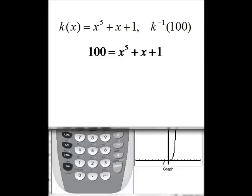Which again, we can write up as k inverse of 100 equals 2.494. Again, we use the approximate because we've rounded off and it's not exact. So that's how we can solve for a particular value using our calculator, particularly when it's difficult to find the inverse function.